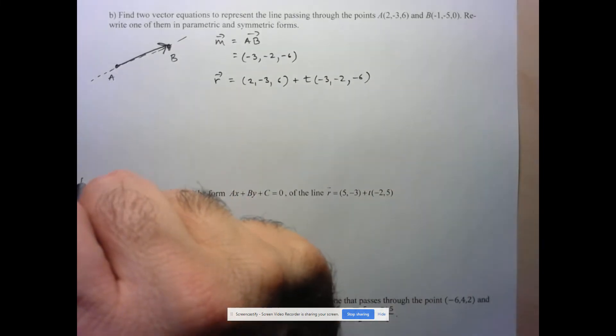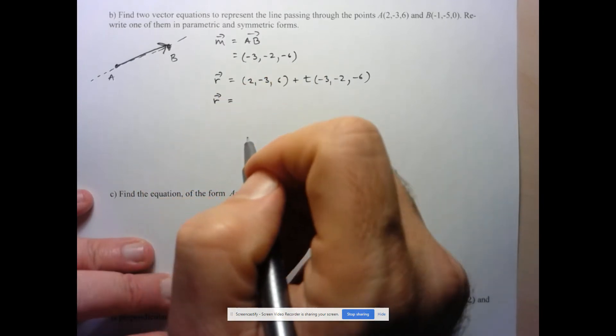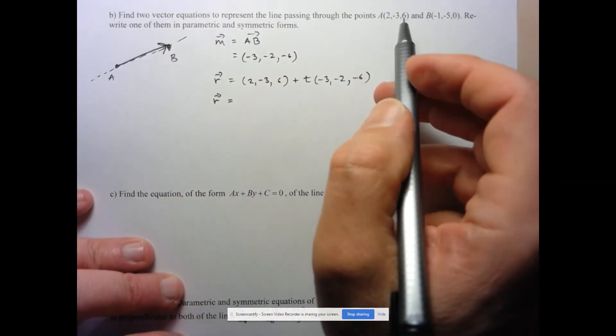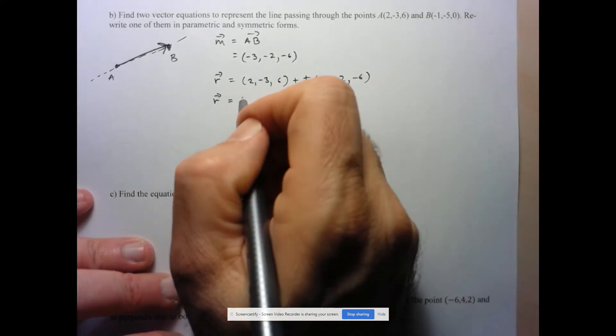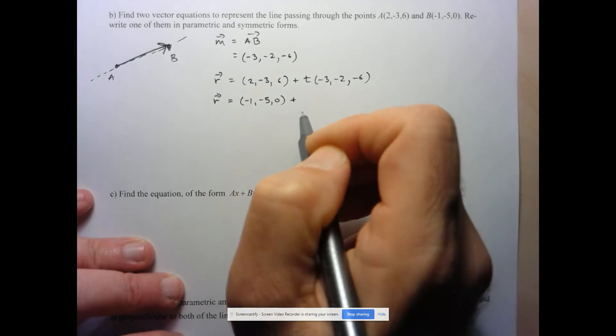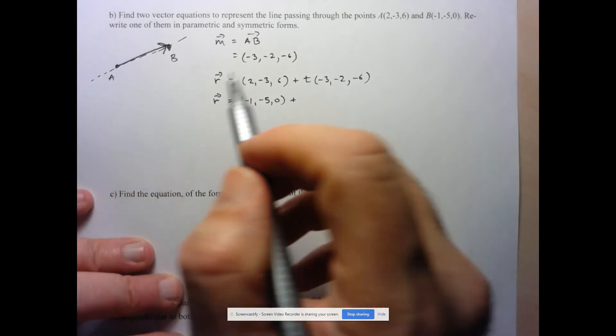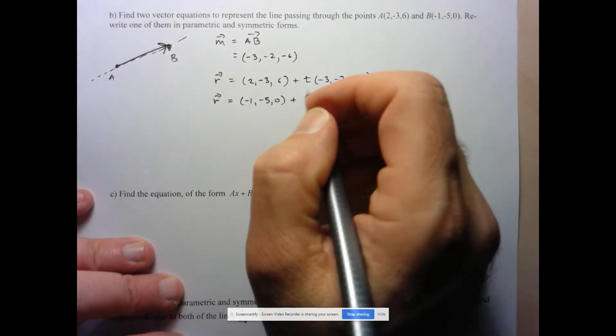Another possible equation would just be, say, in this case here, I'll use this second point. So negative 1, negative 5, 0, plus, and instead of using negative 3, negative 2, 6, I'll use the vector going the other direction, which is also parallel to the line. So here, just to distinguish them, since I've already used T, so T can be any real number.